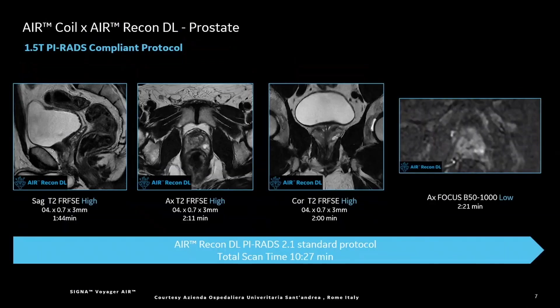One can argue that an even more impactful result can be seen at 1.5T. Here's an example of PI-RADS compliant T2-weighted images as well as the B1000 diffusion-weighted image collected with AIR coil and AIR Recon DL, all in 10 and a half minutes of total scan time.